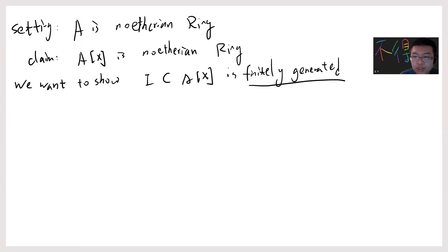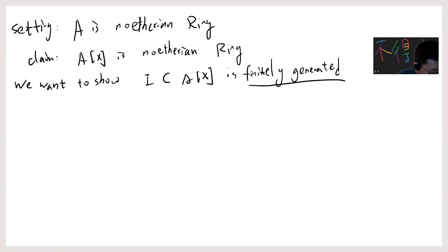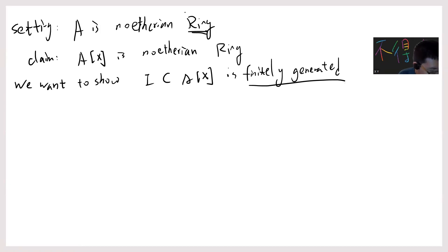By the way, if you subscribe to my channel, you're my good friends. Also, I forgot to mention that every ring in this video is a commutative ring with identity. So I want to claim that I is finitely generated.